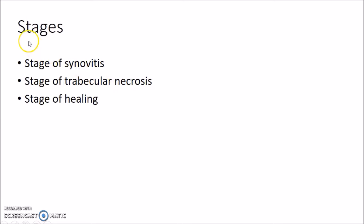There are three stages in Perthes disease: the stage of synovitis, the stage of trabecular necrosis, and the stage of healing.